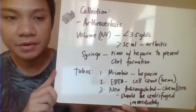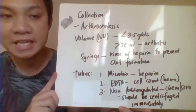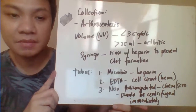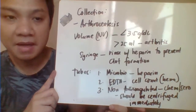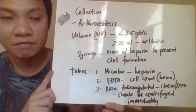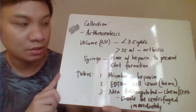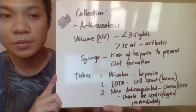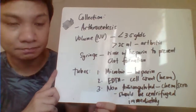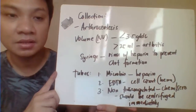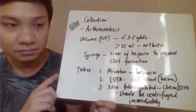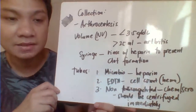Now we have the collection of your synovial fluid specimens. The process is called arthrocentesis. The normal specimen volume should be less than 3.5 mL, but it could go as high as more than 25 mL especially if there is inflammation of the joints in the case of arthritis. Normally, synovial fluid is not able to form a clot unless fibrinogen is introduced. Therefore, to prevent clot formation during collection, you need to rinse your syringe with heparin before aspirating the synovial fluid.